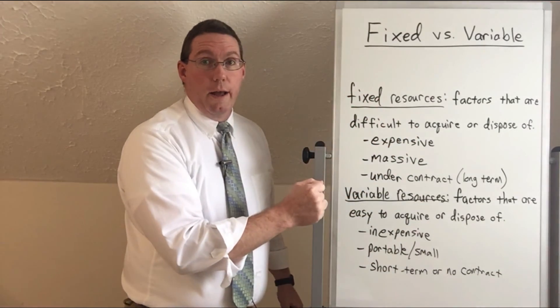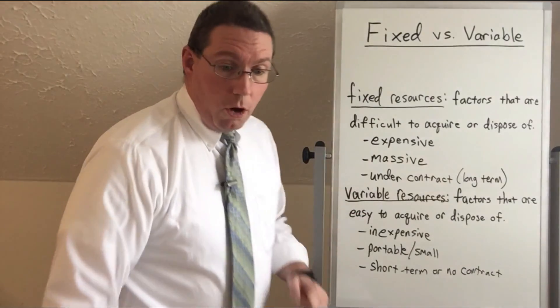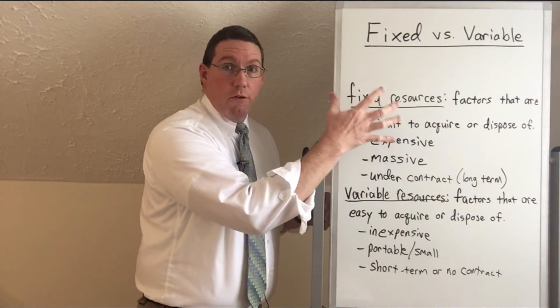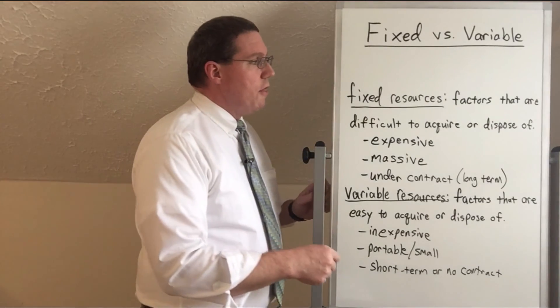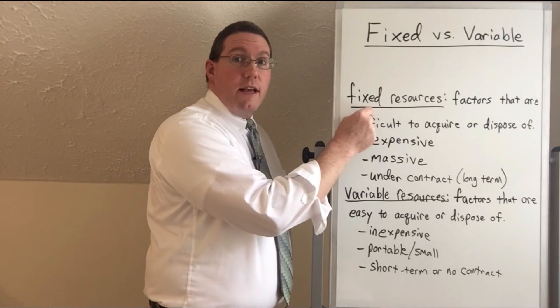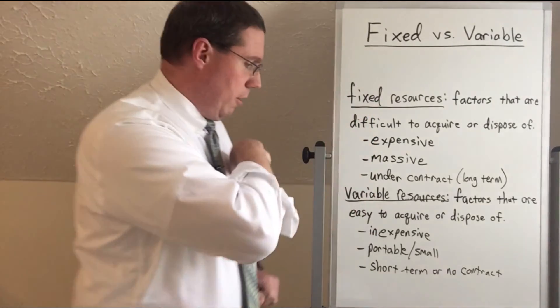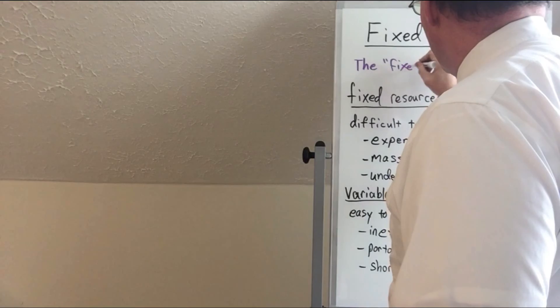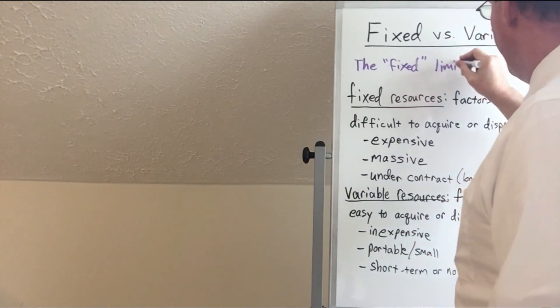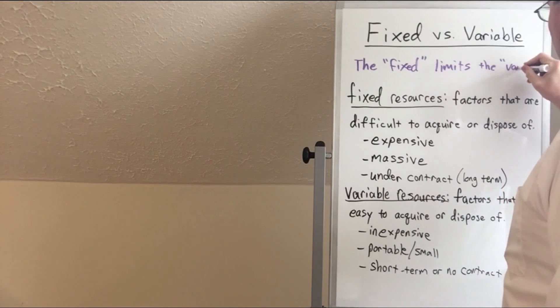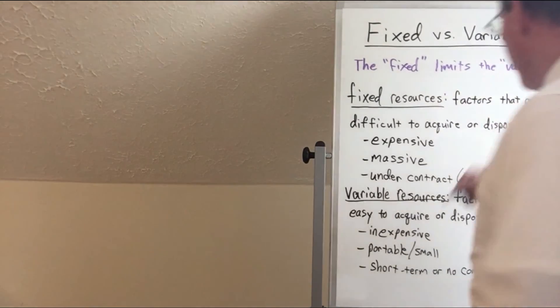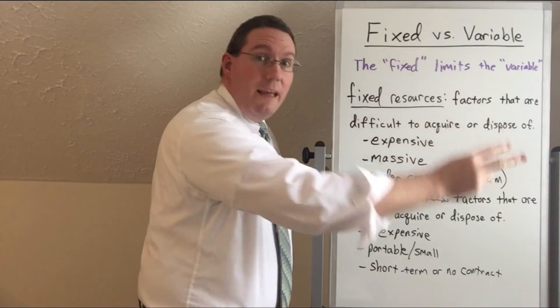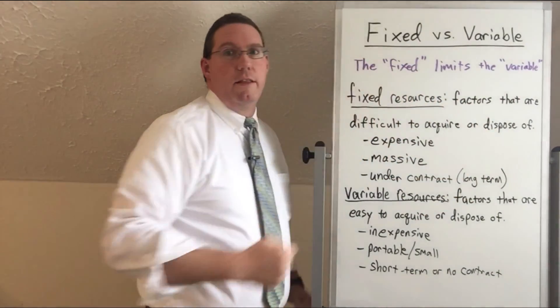But these things are very difficult to acquire and get rid of. And therefore, what we talk a lot about in business is that we work our variable resources around our fixed resources. And that's why what we understand is that the fixed sets the parameters or the limits on the variable. So that's the last thing we're going to write up here is that the fixed limits the variable in economics. And so we often make our decisions about these variable resources that are easy to acquire, but we're limited in how we can make these decisions based on what we have in the fixed.